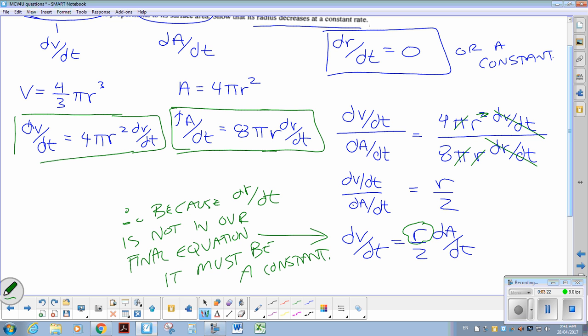Alright, so the volume involved a change in rate of the radius, the surface area involved a rate of change in the radius as well. But when we are doing a comparison of the surface area with respect to how fast it's melting, which is a volume, they undo each other, which means that they play no role, which means therefore, the change in rate of radius must be a constant.